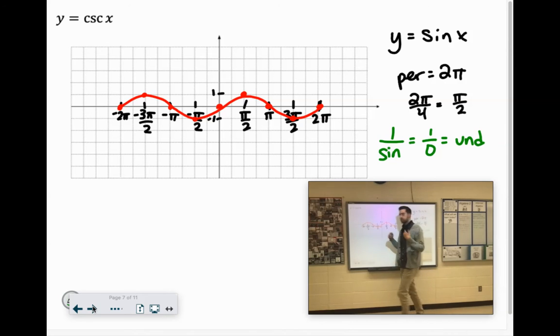So where the sine works out to 0 is every time the sine crosses that center line. So all of these, when we're graphing the cosecant, will turn into asymptotes.